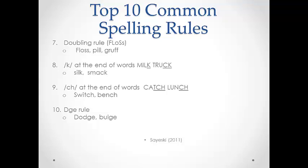Rule number 9 is similar to rule number 8 in that if you hear CH at the end of a word right after a vowel, you must spell it with TCH — the longer way to spell. But if there is another consonant after the vowel, we can use the shorter spelling CH. Number 10 follows the exact same pattern for the J sound spelled with G, E, or DGE at the end of words.